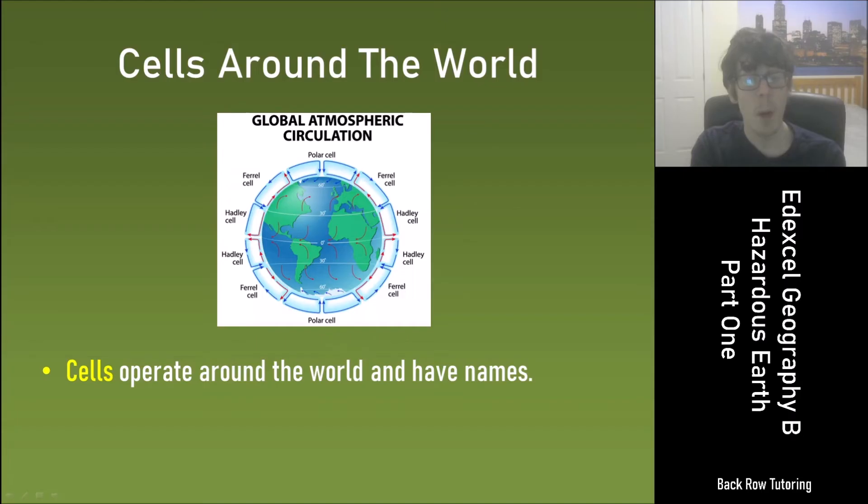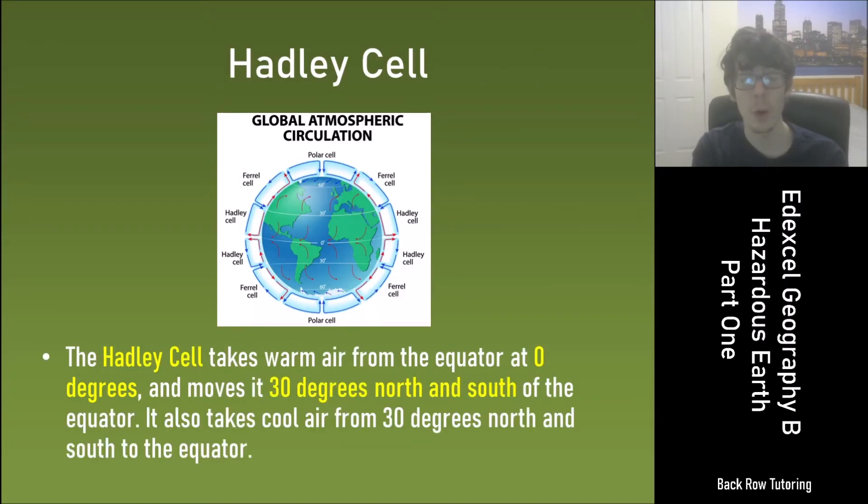Cells operate around the world as we've just seen. These cells are given names. The Hadley cell takes warm air from the equator at 0 degrees and moves it 30 degrees north and south of the equator. It also takes cool air from 30 degrees north and south to the equator.